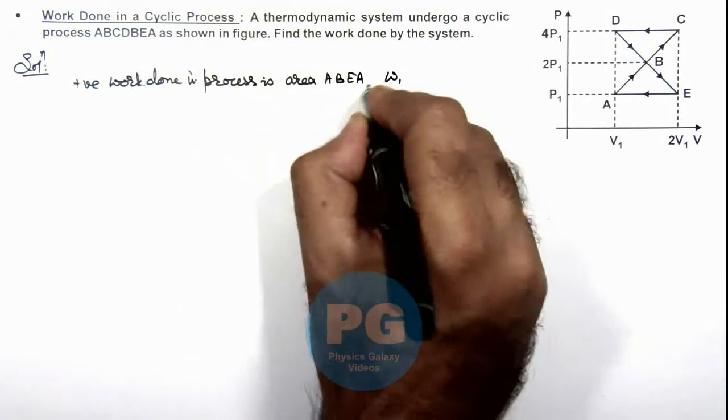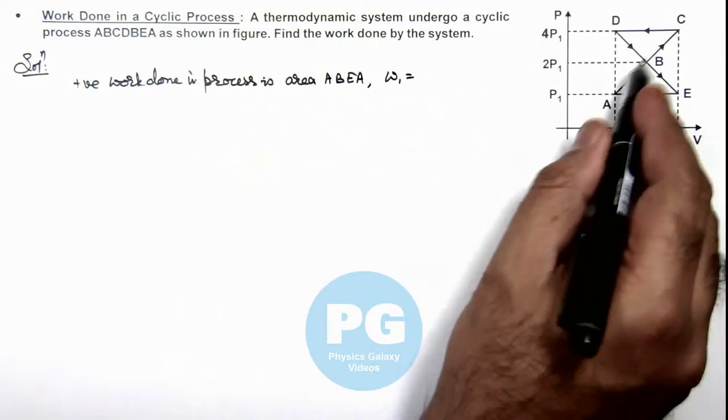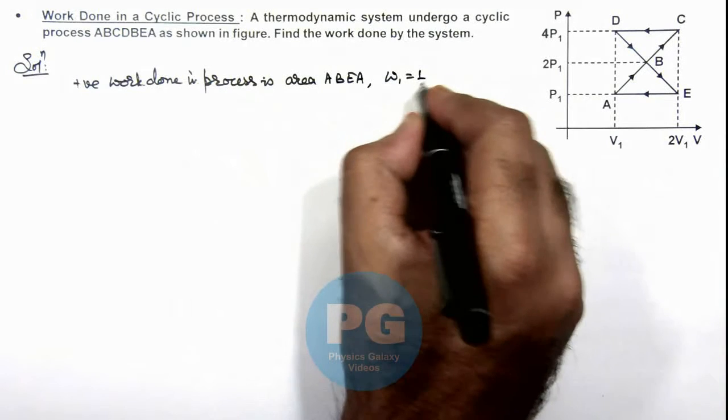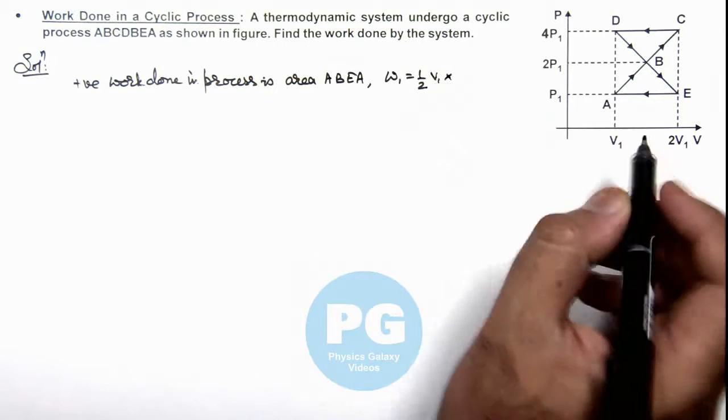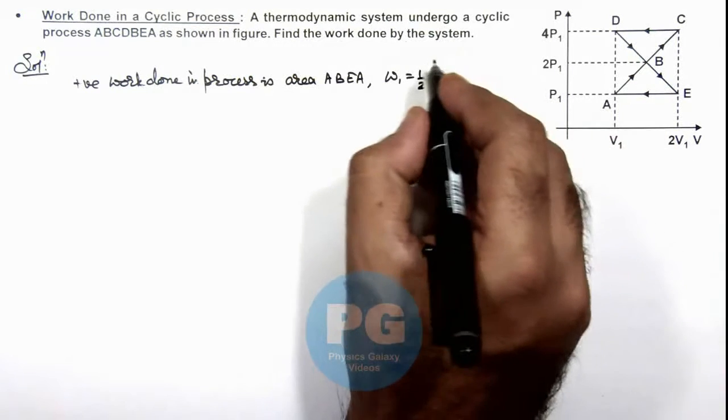So this W₁ can be given as the area of this triangle, which is half of the base length V₁ multiplied by the height P₁.